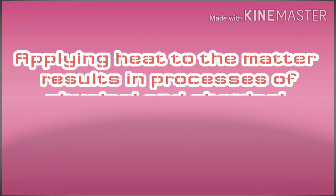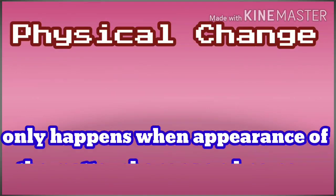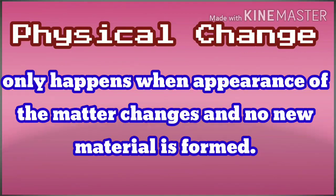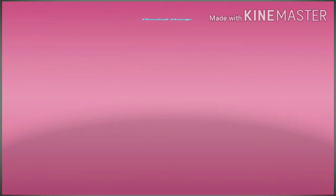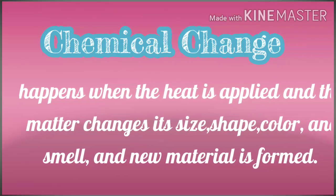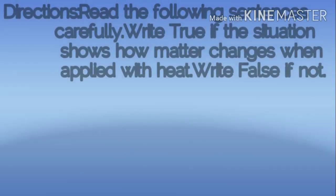Applying heat to matter results in processes of physical and chemical changes. Physical change only happens when the appearance of the matter changes and no new material is formed. Meanwhile, chemical change happens when heat is applied and the matter changes its size, shape, color, and smell, and a new material is formed.